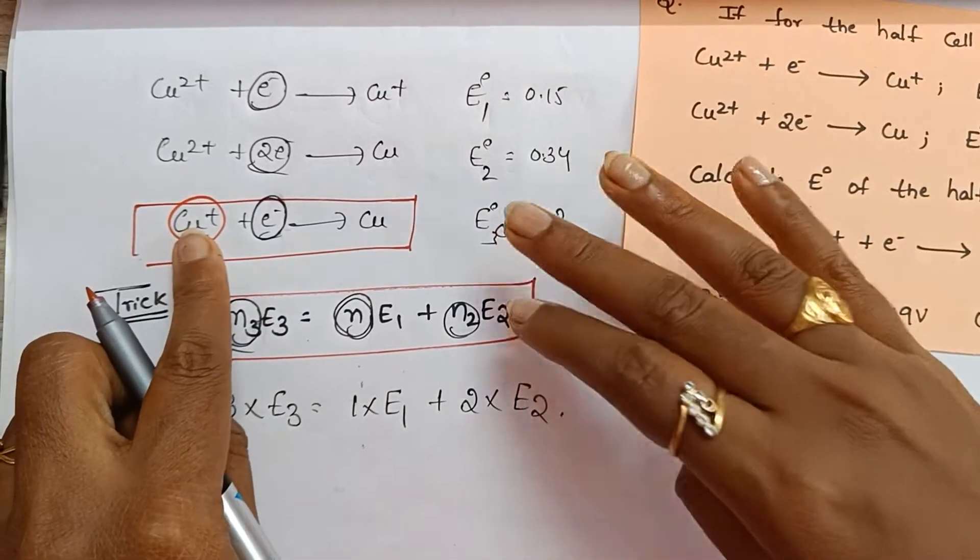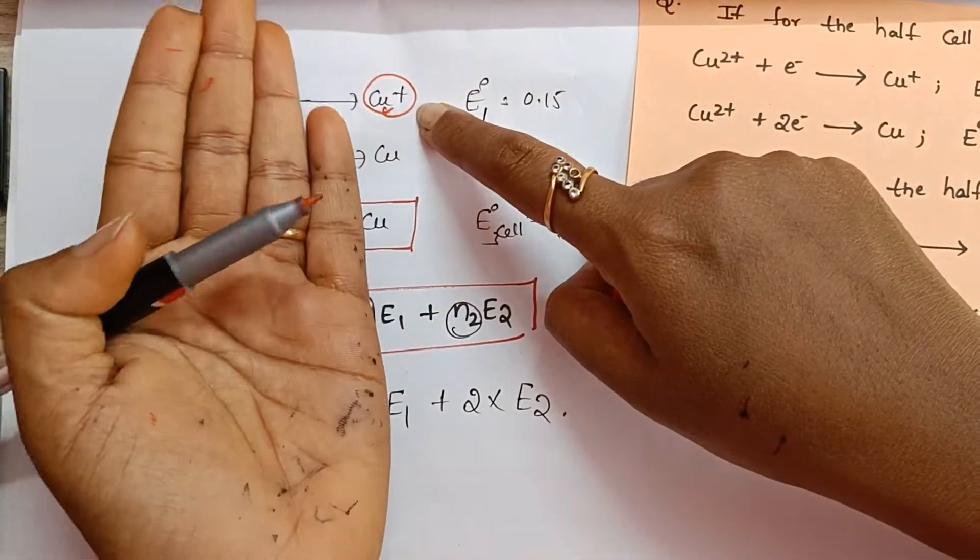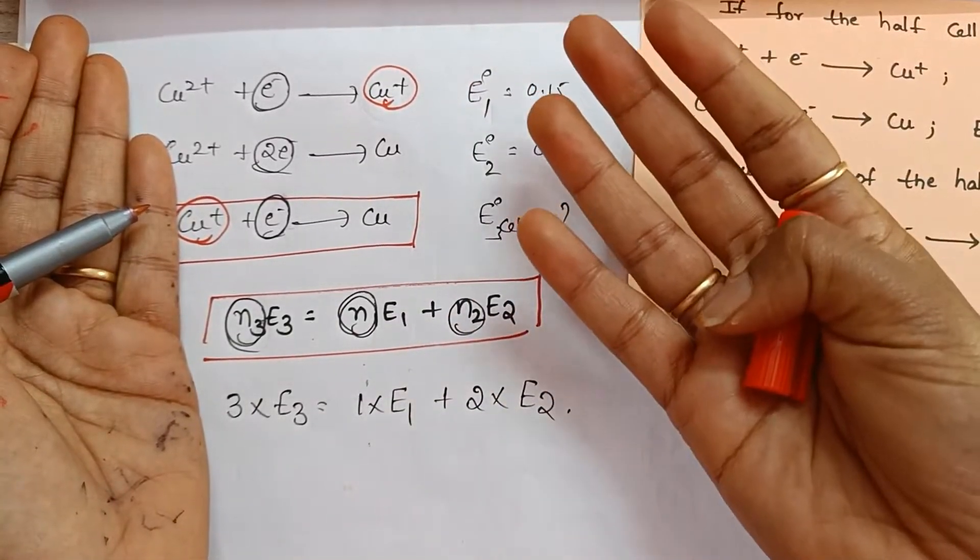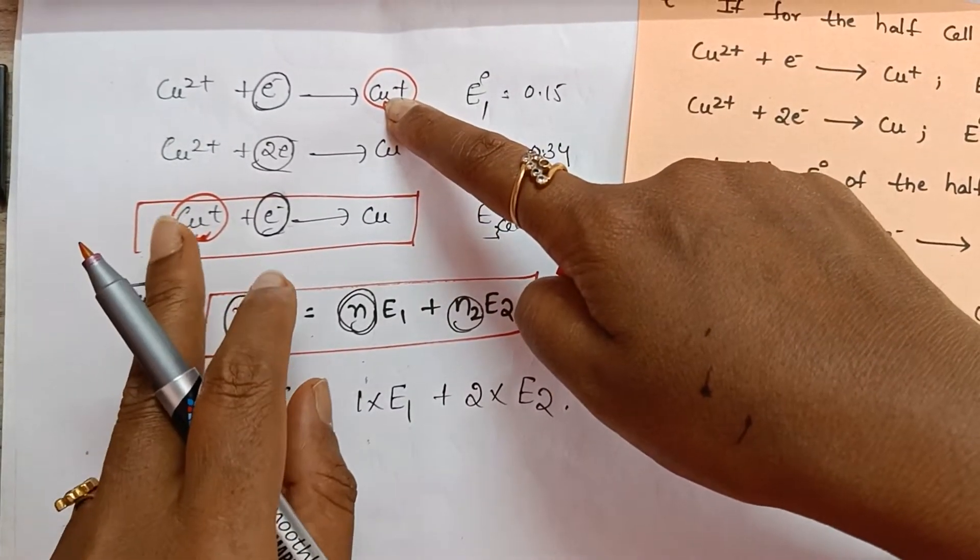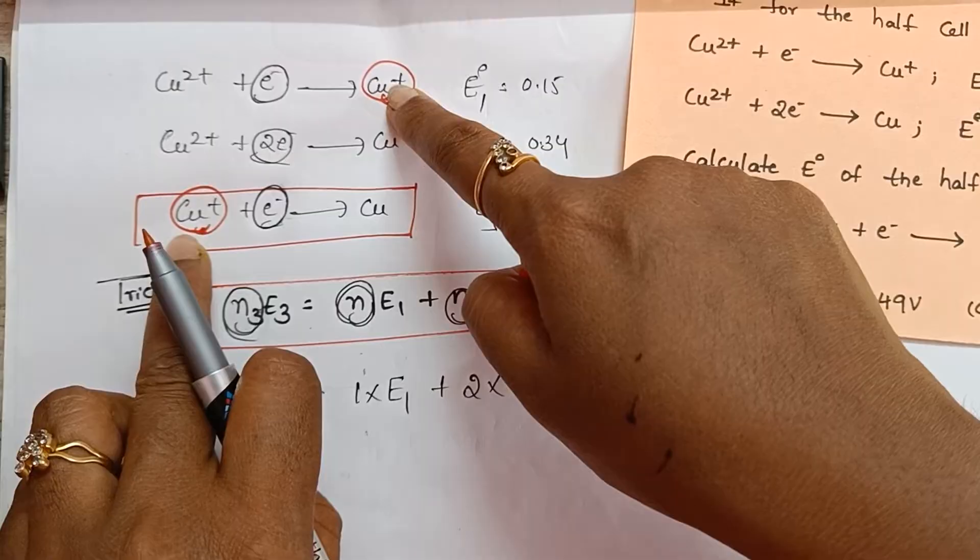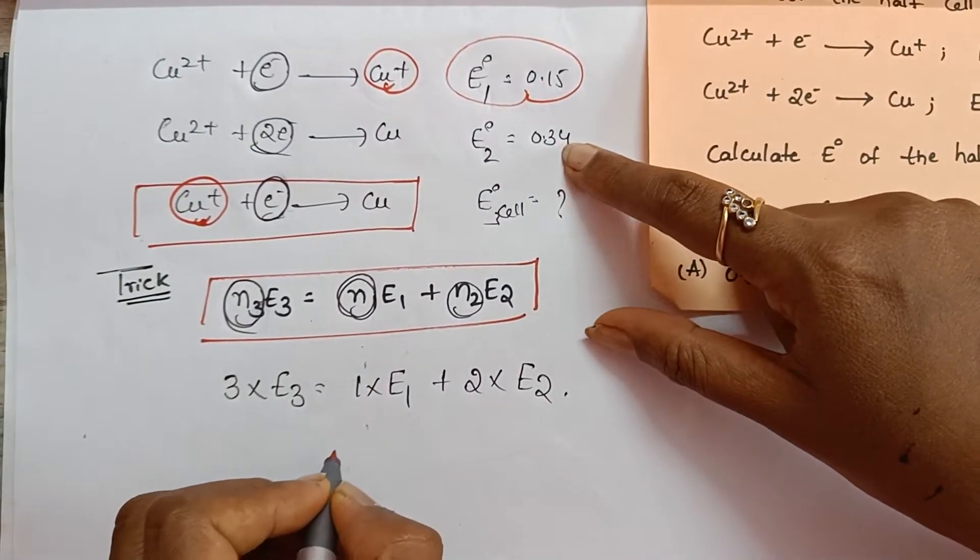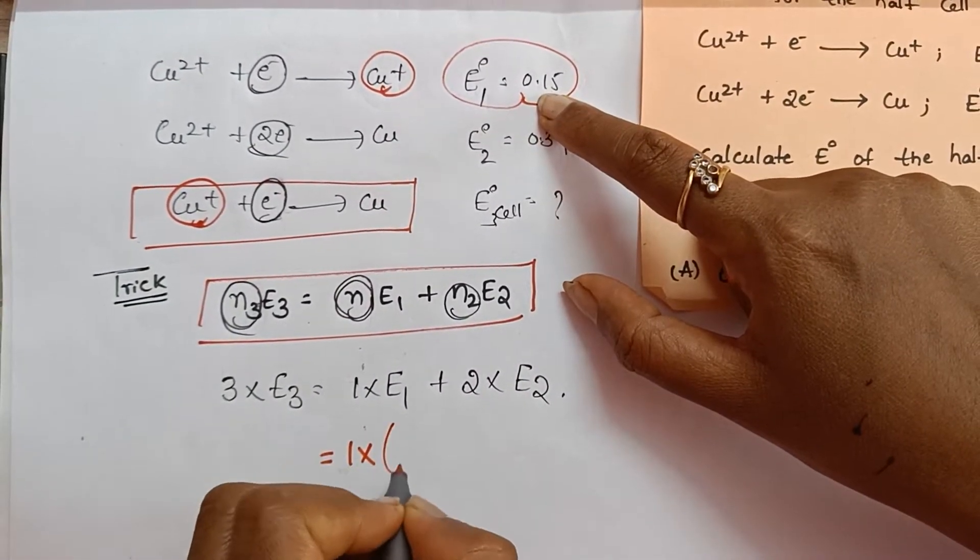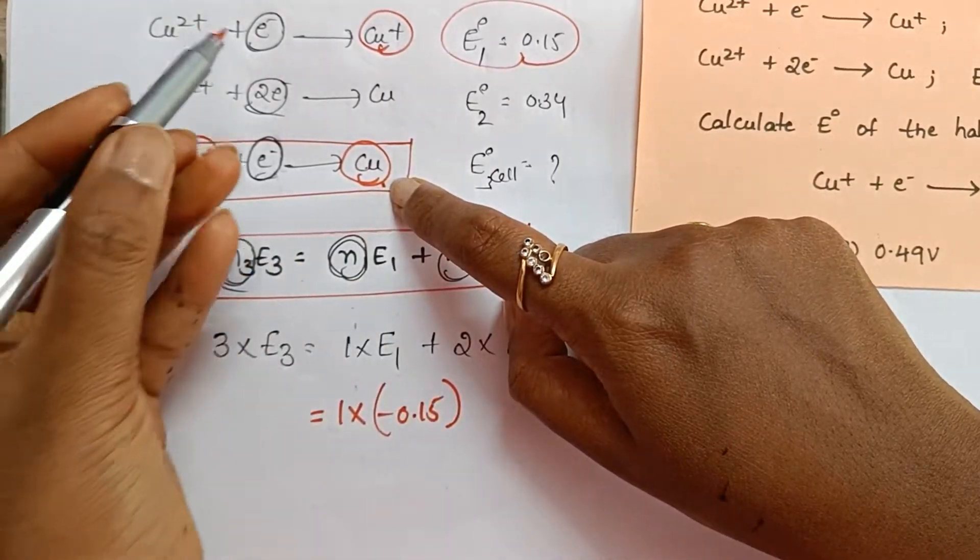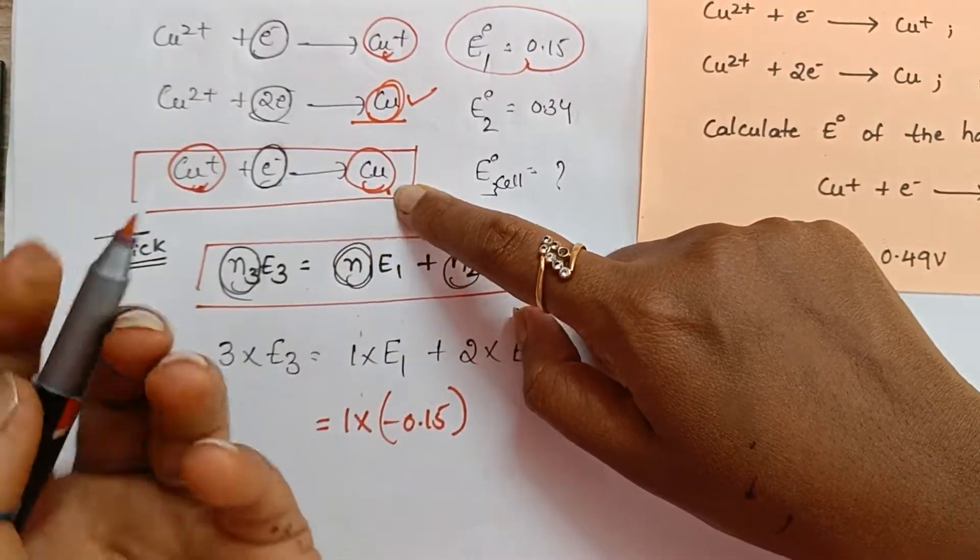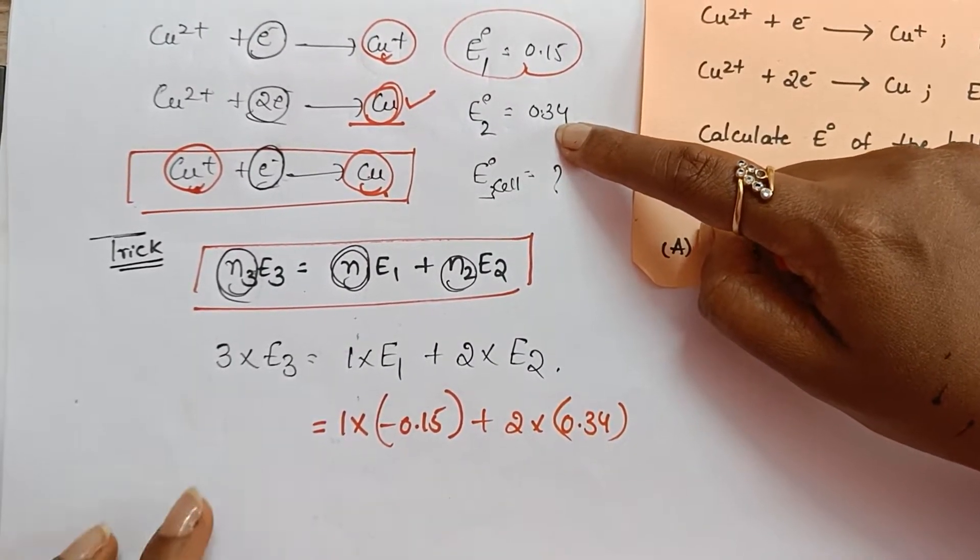Here is a super tip for you, listen carefully. This is the reaction given in the question. What are reactants? Cu+ is a reactant. In these two given data, Cu+ is on which side? Product side it is. Left hand side are reactants, right hand side are products. So this is product side, this is reactant side, this is in product side. We want it in reactant side but they have given in product side. So E0, whatever they have given, opposite value we have to substitute.